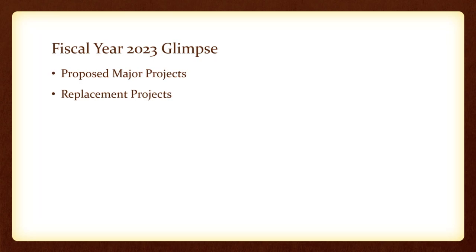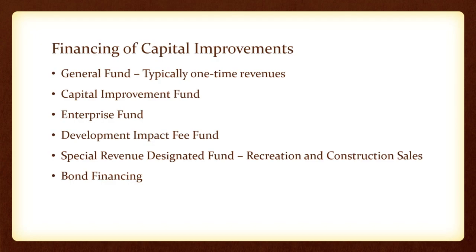Turning to a more detailed look at financing methodologies: there are a variety of funding sources typically allocated to capital improvement programs. A key management consideration is that if you build something new or add a level of service, what are the long-term operational and maintenance costs? Funding sources include general fund transfers to the capital improvement fund, enterprise fund revenues for utility-related projects such as water, wastewater, and sanitation, and development impact fee funds — which cover categories ranging from public safety to streets to sewer, collected from each new residential or commercial development in the community.